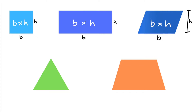Moving on to find the area of a triangle, we need to take the base and, just like the parallelogram, multiply it by its vertical height h. But then for triangles, we have to divide this by 2. So our formula for the area of a triangle is base multiplied by height, divided by 2.